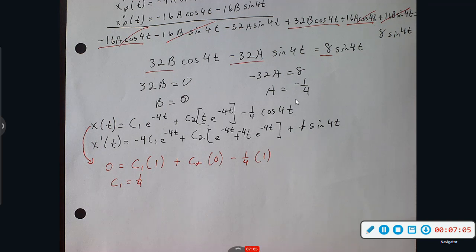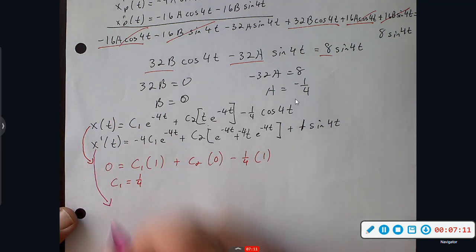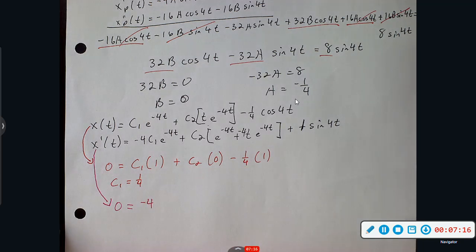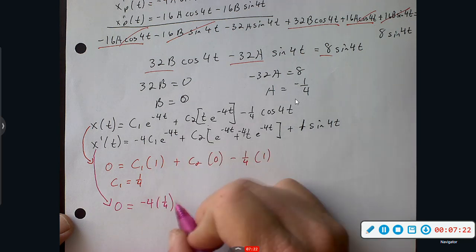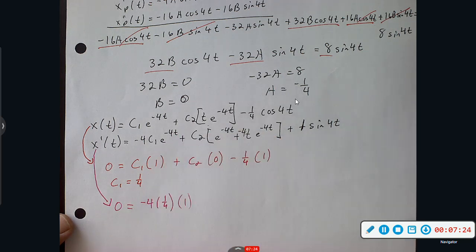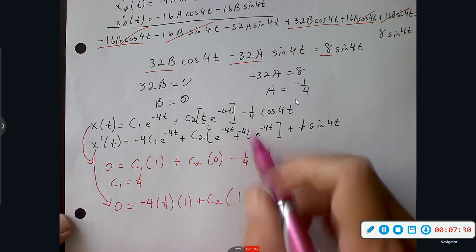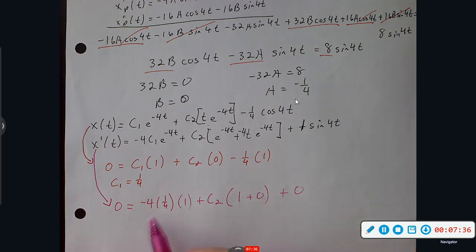Alright, let's do the next one. So plugging in zero again, negative four. C1, well C1 was one fourth, that's times one, e to the zero. Plus C2, let's see what we get here, we get a one, and then that's zero, and then sine goes away. So I have this negative four times one fourth, which is negative one, and you add to the other side, you get one. And we have a C2 around, so C2 is one.